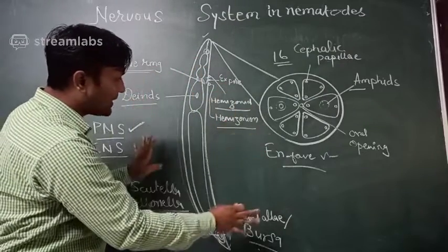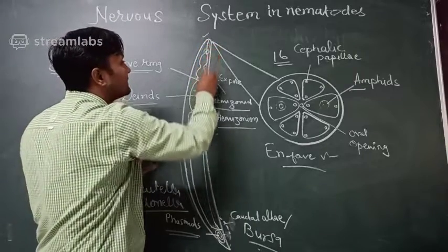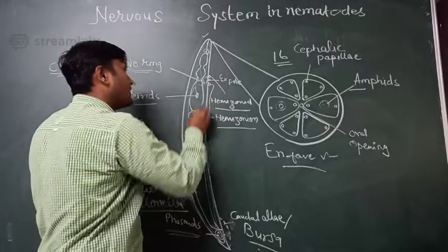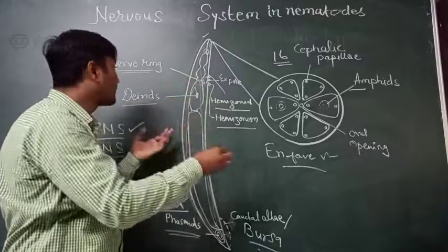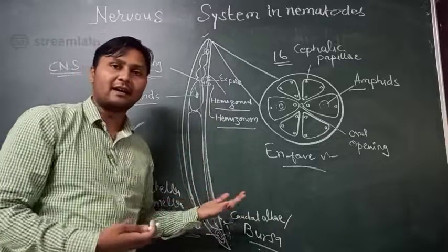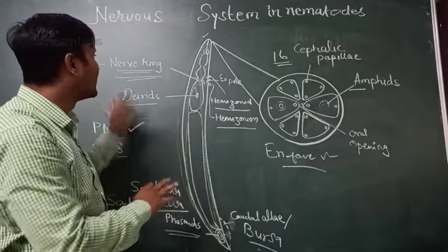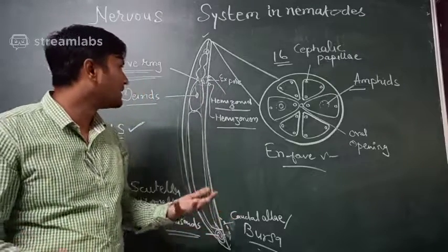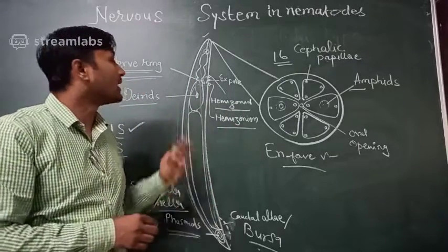All the peripheral nervous points are well connected with the nerve band. They transfer messages simultaneously from the peripheral points to the nerve ring. The nerve ring is also known as the brain of the nematode. It passes messages to react to any activities, governing action and reaction. The nerve ring has six to eight ganglion bands that govern all the nervous points.